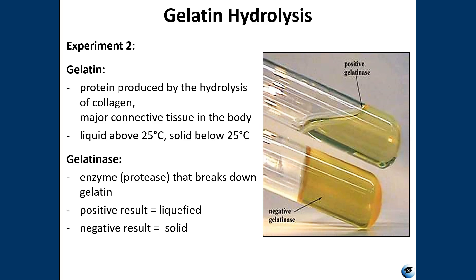Nutrient gelatin differs from most other solid media in that the solidifying agent is also the substrate for enzymatic activity — the gelatin is what makes the media solid, but it's also the thing we're trying to see if it can be hydrolyzed by gelatinase. A tube of nutrient gelatin is stab-inoculated just like any other deep. If the organism is gelatinase-positive, it secretes the enzyme and liquefies the media. If it comes back solid it's negative; if it comes back liquid it is positive for gelatinase.